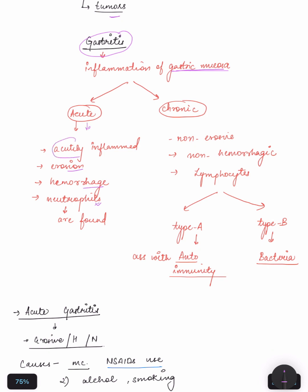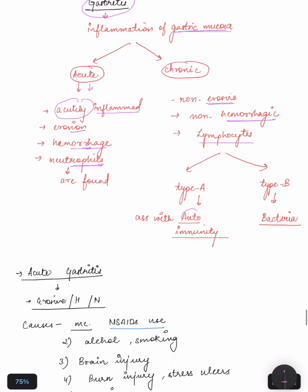Acute means acutely inflamed, erosion and hemorrhage take place, and we can find neutrophils are present there. In the chronic form we have non-erosion, non-hemorrhage, and lymphocytes. Chronic gastritis can be of two types: type A and type B. Type A is associated with autoimmunity and type B is associated with bacteria.